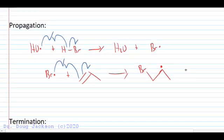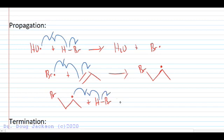A third propagation step sets our product by taking the HBr that's still in solution. We've got an excess here and then forming our product plus another bromine radical that can continue to do the work of the reaction. So we've at least got the formation of our product here in our reaction.